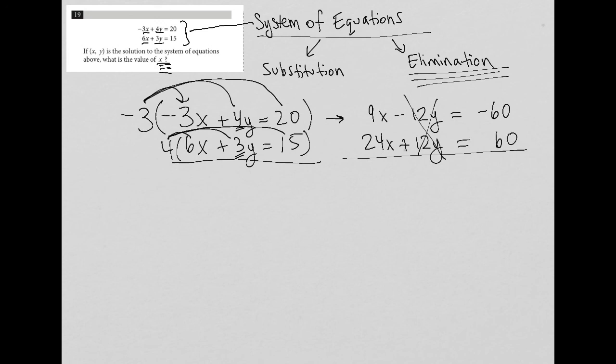So, when I combine these two equations together now, when I add them together, I get 9x plus 24x, which is 33x. And I get negative 60 plus 60, which is 0, which means I can divide both sides by 33 if I want. It means that x must equal 0. So, my answer here is 0.